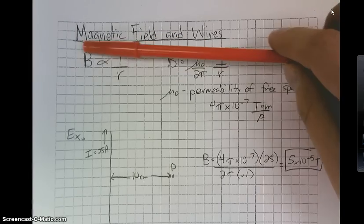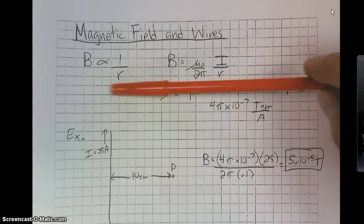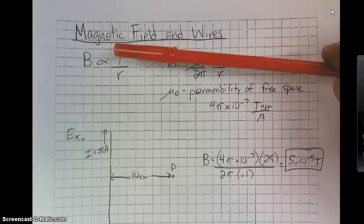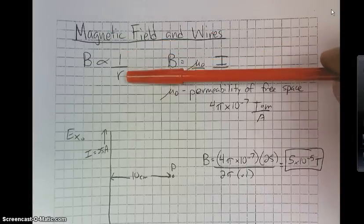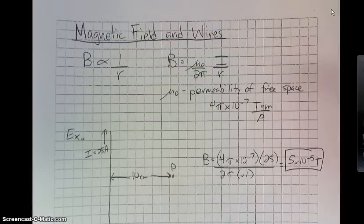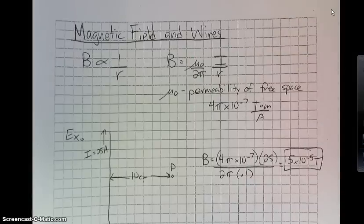If you do the lab, you find out that we end up with an inverse relationship between the magnetic field and the actual radius. There is an equation for it, and it's this little thing over here.